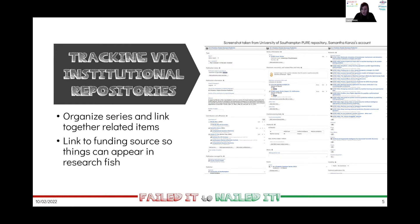The screenshots on this slide come from our institutional repository at the University of Southampton, which uses Pure. This is an example of a report we produced for one of our conferences — one of the many different outputs for that event. As you can see, it has a DOI, so it can be cited and referred to. It also has the uploaded copy of the report. As a note, for journal papers with open access policies, you can sometimes embargo, but if it's your own report and you're making it open, it's absolutely fine to upload.